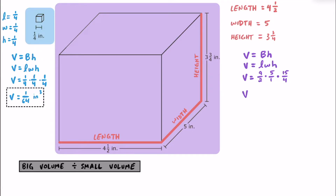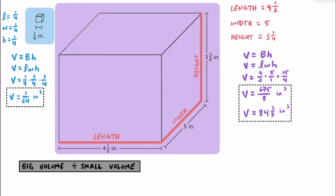Multiplying these fractions together: on top we have nine times five times fifteen, which is 45 times 15, equaling 675. In the denominator we have two times one times four, which is eight. So the volume of this right rectangular prism is 675 eighths cubic inches, which can also be written as the mixed number 84 and three eighths cubic inches.